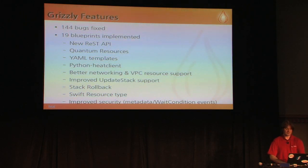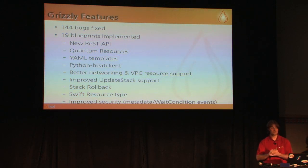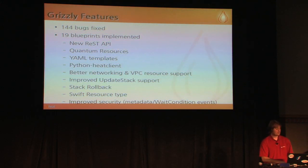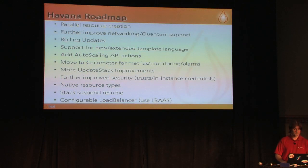We've got a native Swift resource type, much improved security — something we've had sessions on this week — and we're going to be able to make good use of work going on in Keystone. For example, the Trusts work is going to be extremely useful to us. There's going to be a lot of these features as version 2 in Havana. So this takes me on to the Havana roadmap. Zane, another core dev on the HEAT project, has offered to come up and walk us through this.